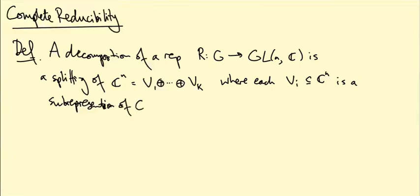What does that mean? That means that R(g)V is in V_i whenever V is in V_i. So if we start off in one of these pieces and apply our matrix, then we stay inside that piece. That's what it means to be a sub-representation.